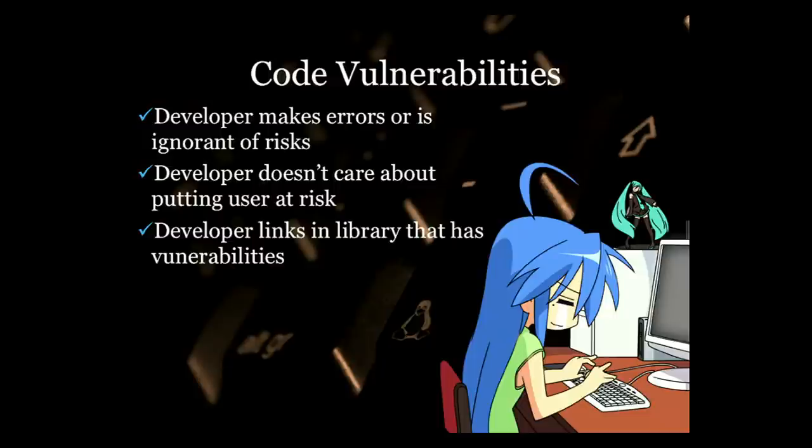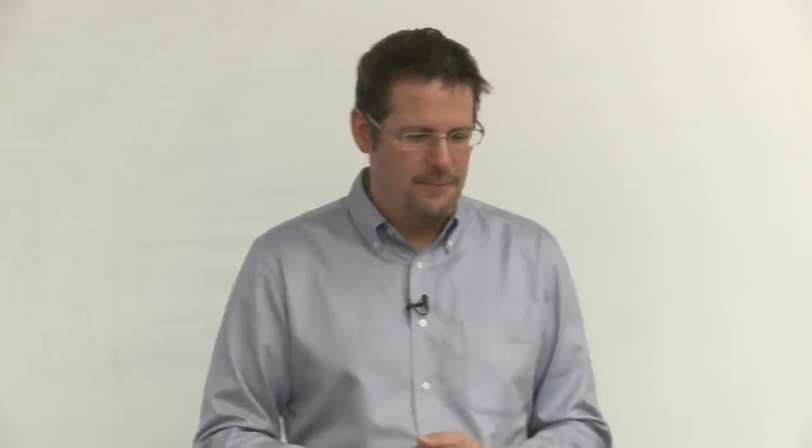Now I'm going to switch to the second half and talk about code vulnerabilities — the second half of the risky activity. This is where essentially the developer is making errors. A legitimate developer writing a legitimate app is making errors or is ignorant of the risks of the mobile platform; they just don't know how to make a secure mobile app. Sometimes the developer doesn't care about putting the user at risk, and part of their business model might be harvesting the user's personal information. That's why some of this malicious versus legitimate starts to bleed over — there's a difference of opinions between what the user considers risky and what the application developer considers risky.